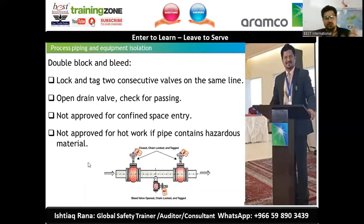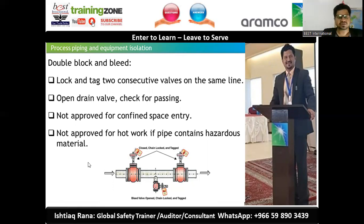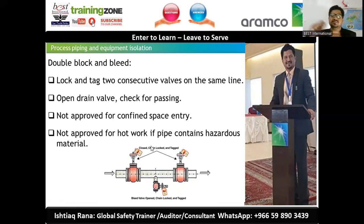Double block and bleed uses two block valves in the same line that can be closed, with a drain valve in between to drain liquid, allow water washing, steaming, and purging to bring LEL to zero for hot work. Steps: lock and tag both block valves, open the drain valve, and check for passing. However, double block and bleed is NOT approved for confined space entry, and is also not approved for hot work if the pipe contains hazardous materials such as hydrocarbons.